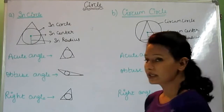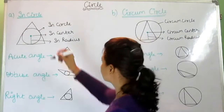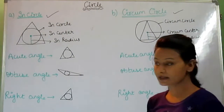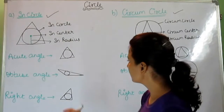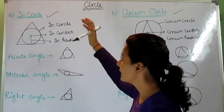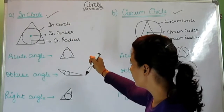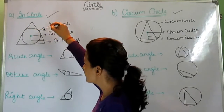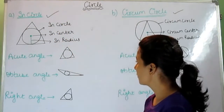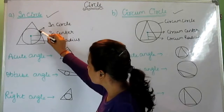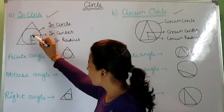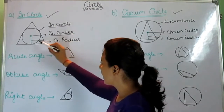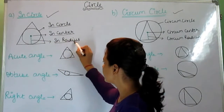I have written two types of circle on the board. One is incircle and another is circumcircle. I have drawn an incircle on the board. In the incircle, the circle lies inside the triangle. This point, the center of the circle, is called the incenter, and this radius is known as the inradius.